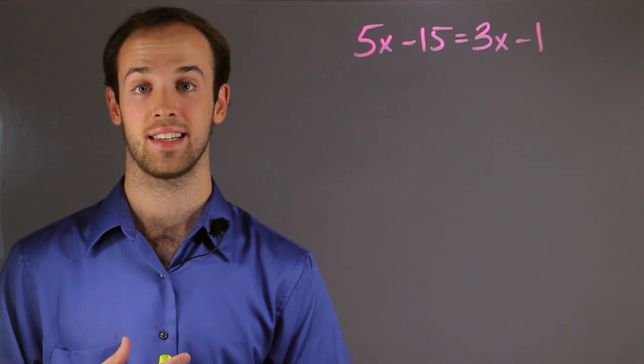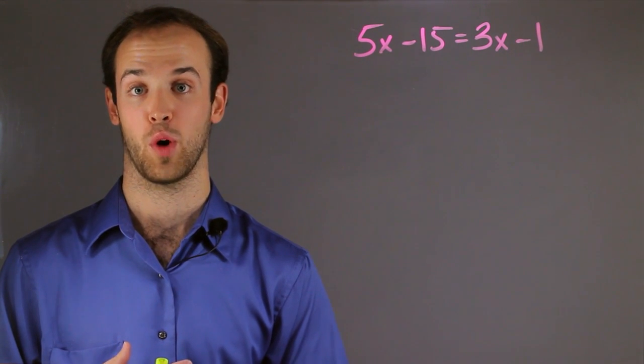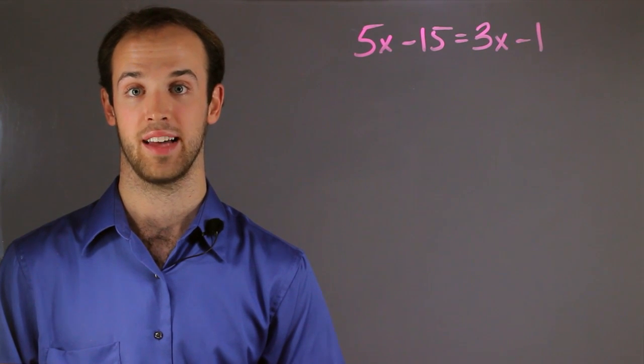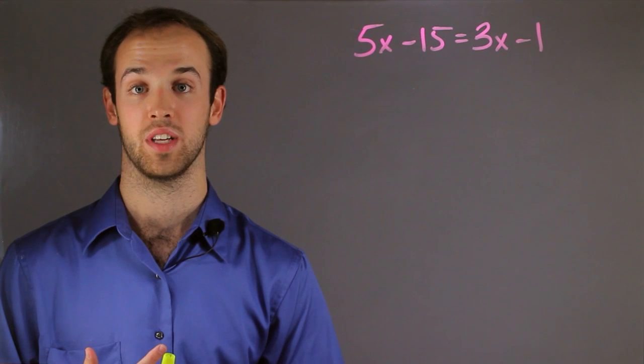One, we want to isolate the variable, that is get the variable all alone on one side, and we want to do the same thing to both sides. So whatever I do to one side, I have to do to the other.